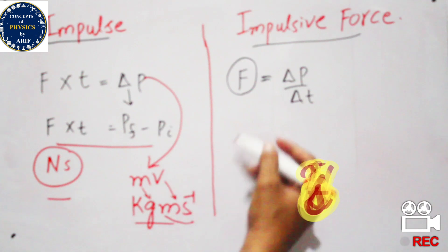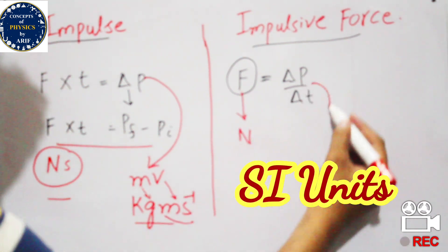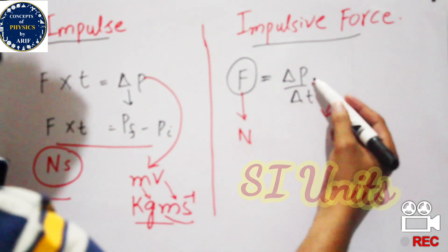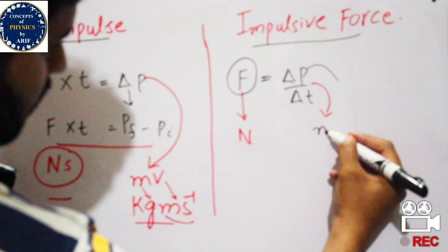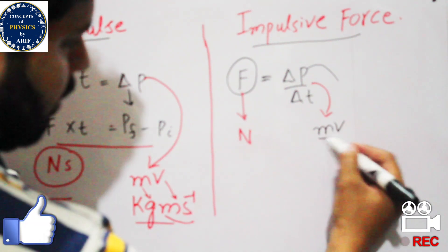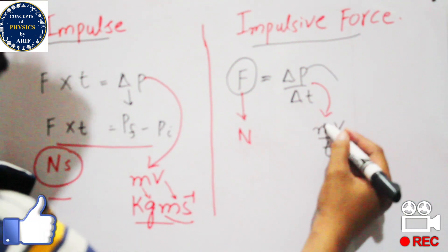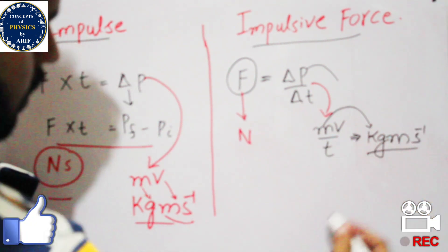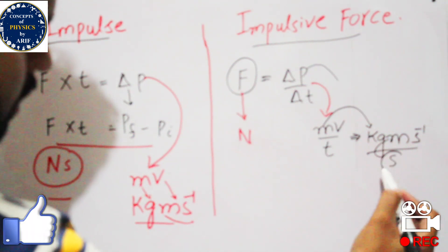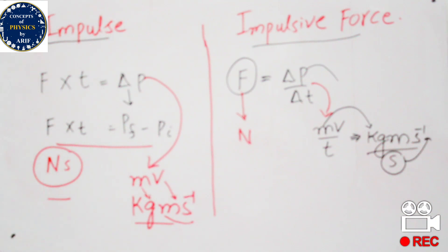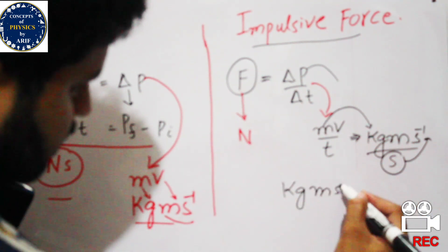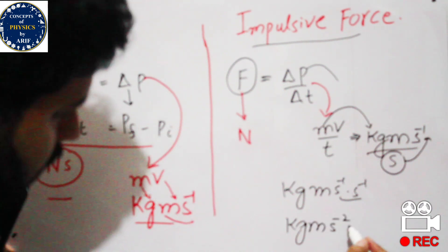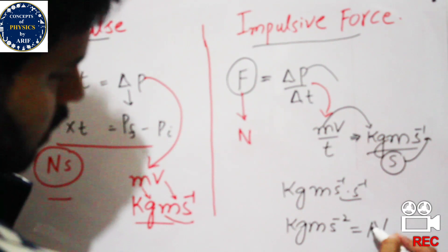The SI unit of force is Newton. To prove the unit relationship, the formula of momentum is mv divided by time. Converting into units: mass has unit kilogram, velocity has unit meter per second, and time has unit second. So the total unit becomes kilogram meter per second squared, which is the unit of impulsive force.